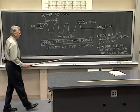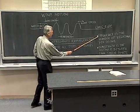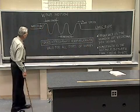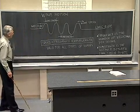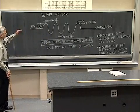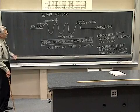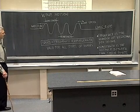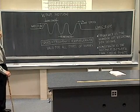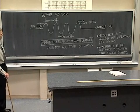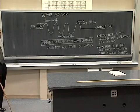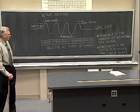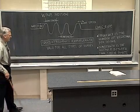The frequency is the number of vibrations per second. Whatever is wiggling the rope to generate the waves will be vibrating so many times per second. The frequency is the number of oscillations or vibrations per second.